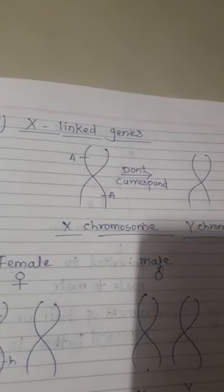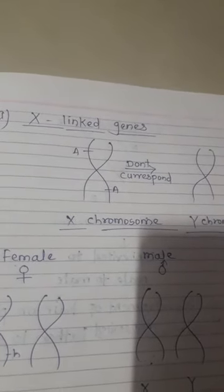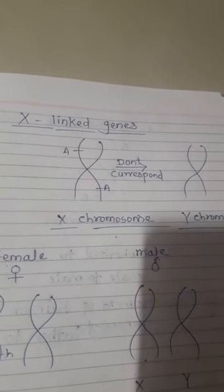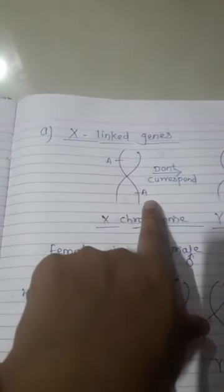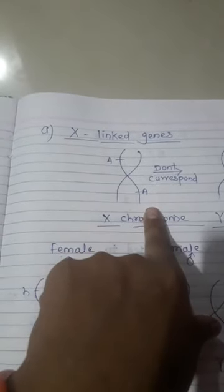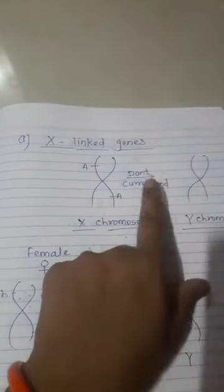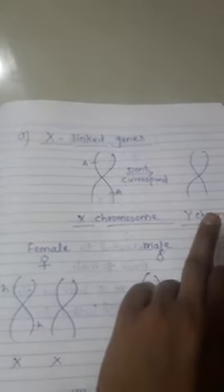X-linked genes means genes present on the sex chromosome that are linked together. The X-linked genes are located on the non-homologous region of the X chromosome, and these genes do not have corresponding alleles on the Y chromosome. Where genes are present in the non-homologous region of X, they are absent on the Y chromosome and do not correspond to it.